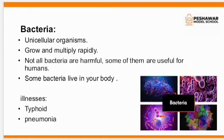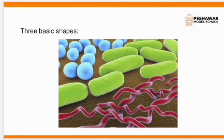The next one is bacteria. Bacteria are basically unicellular organisms. You have to understand what is meant by unicellular: 'uni' means one, and 'cellular' refers to cells, which means it is a single-cell organism. Bacteria grow and multiply rapidly — they increase their number very fast. A bacterial cell exists in three basic shapes: round, rod-shaped, and the spiral/curl shape.